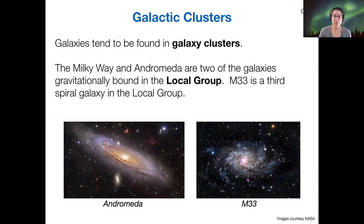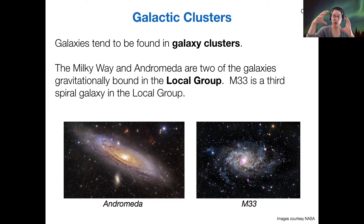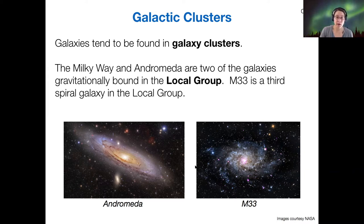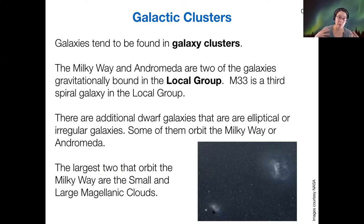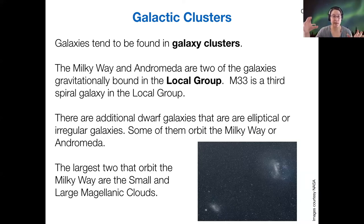We've talked about this before, but galaxies tend to be found in galaxy clusters. The Milky Way and Andromeda, for instance, are the two largest galaxies within our own local group. M33 is a third but smaller spiral galaxy also in our local group. When we look at the distances to galaxies even within our local group, they're pretty far. There are also dwarf galaxies and other small minor galaxies — some orbit the Milky Way, some orbit Andromeda, and some are scattered around in between those two major galaxies in the local group.